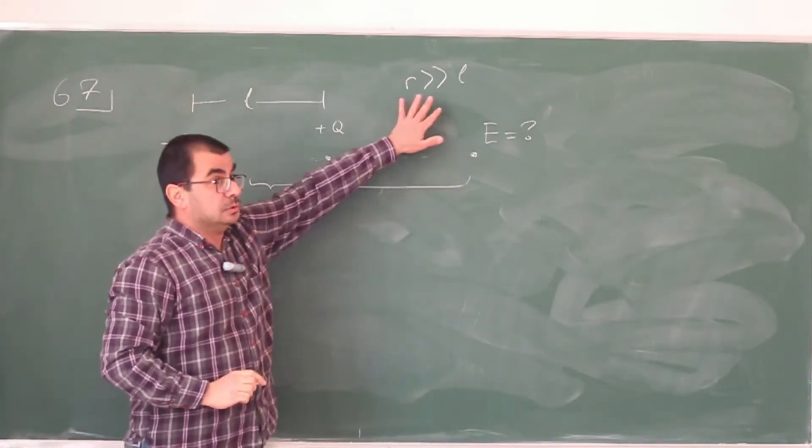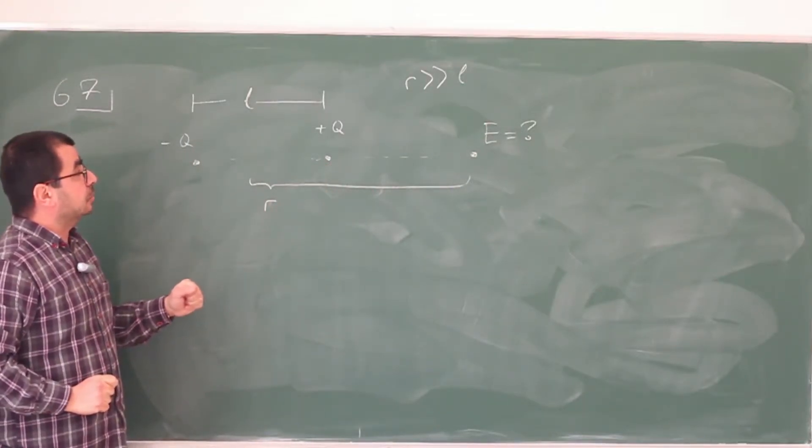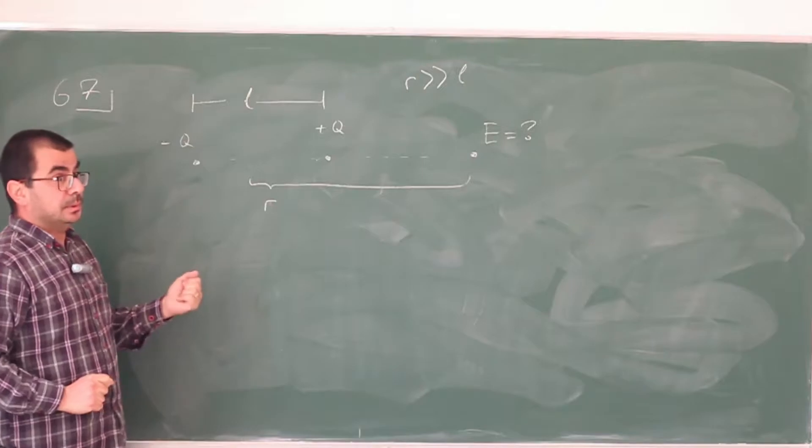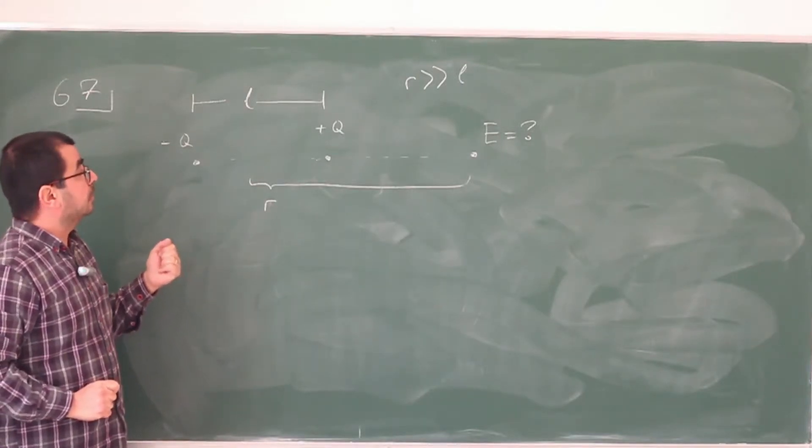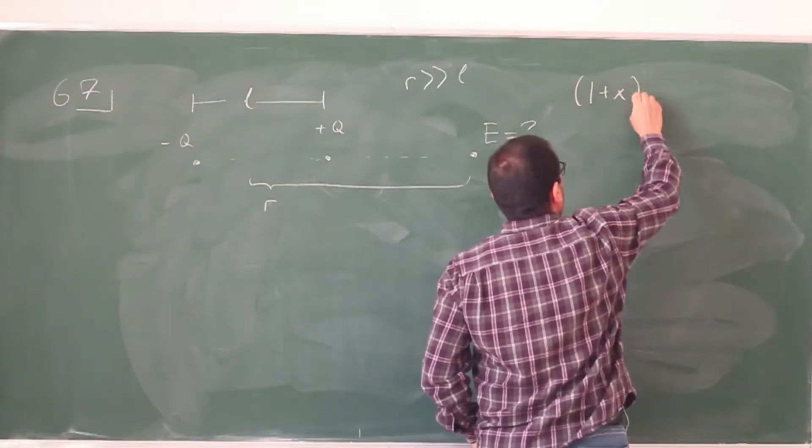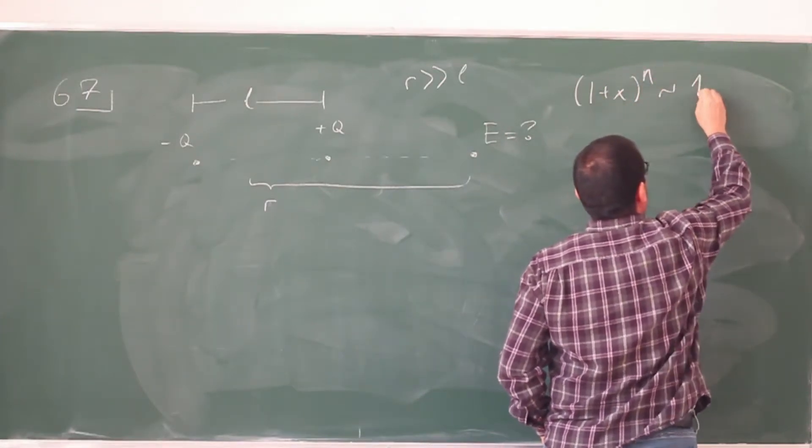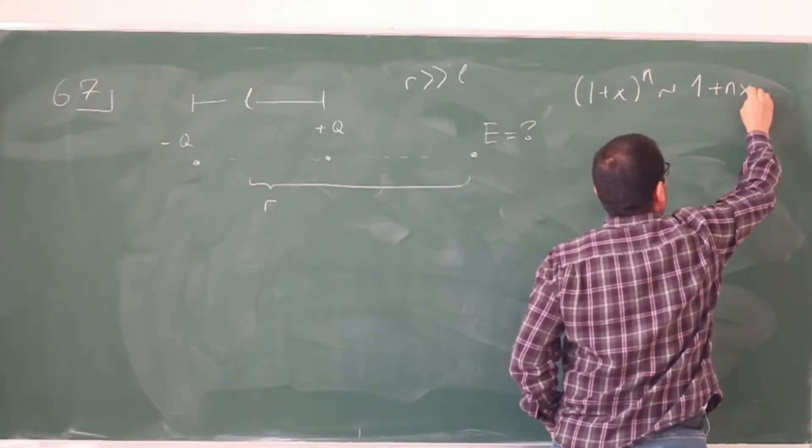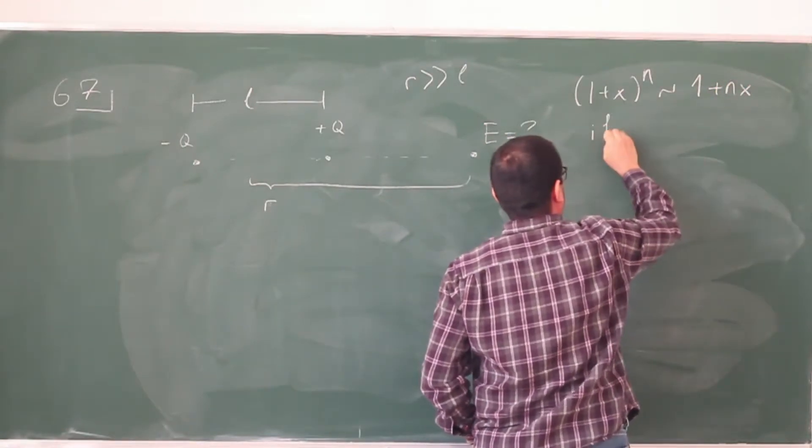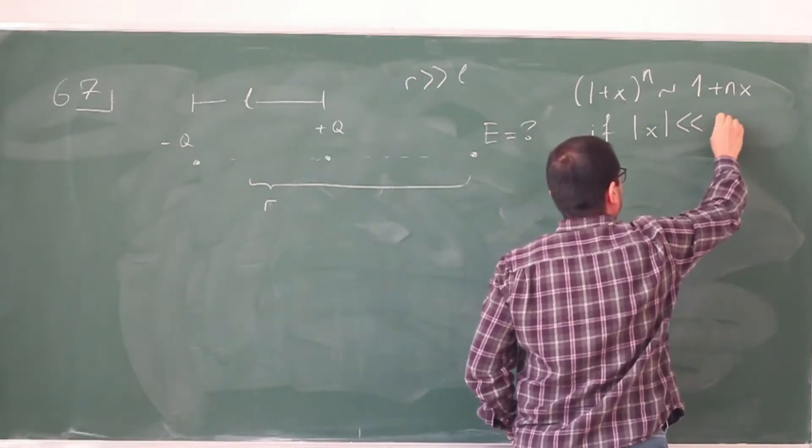So we are going to use this to make some approximations, and those approximations are going to be based on the so-called binomial expansion. So binomial expansion is something that has a lot of applications. So it's basically (1 + x)^n is going to be approximately 1 + nx if the absolute value of x is much smaller than 1.